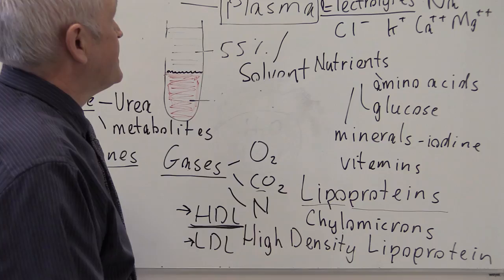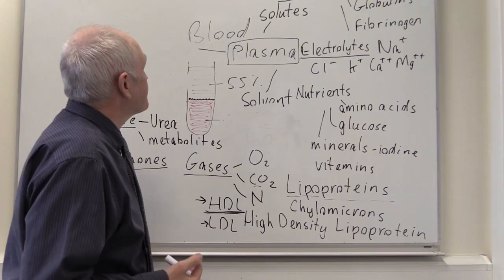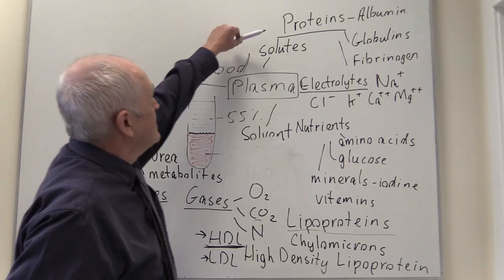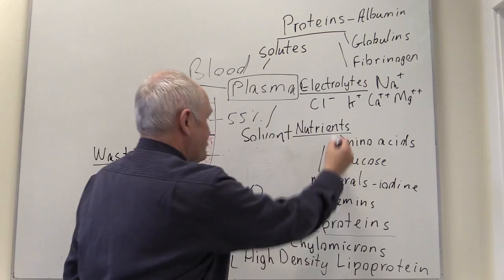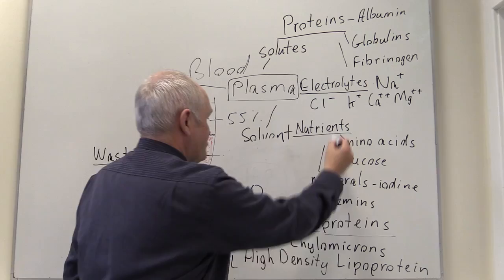That's just a quick tour of the plasma. We've considered the fact that blood is divided into the plasma and the cells. The plasma's solvent is water, and the solutes include proteins, electrolytes, nutrients, lipoproteins, waste products, hormones, and gases — all being carried around the body in this great circulatory system which is the blood.